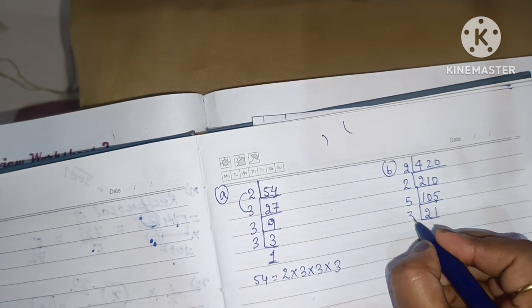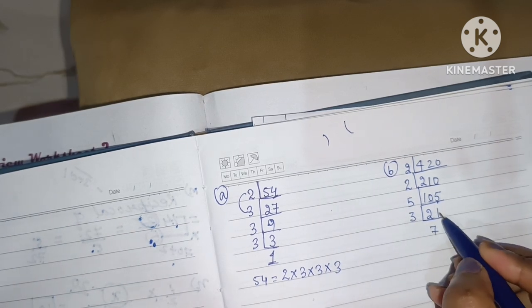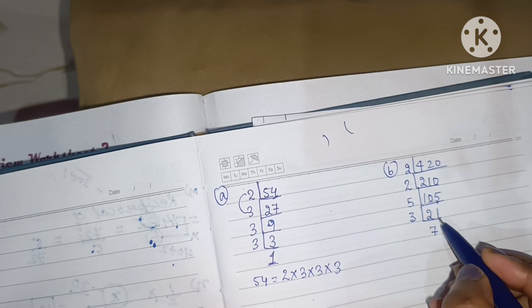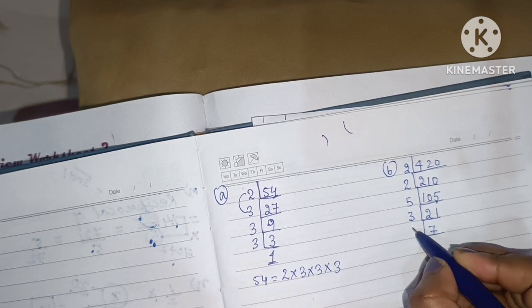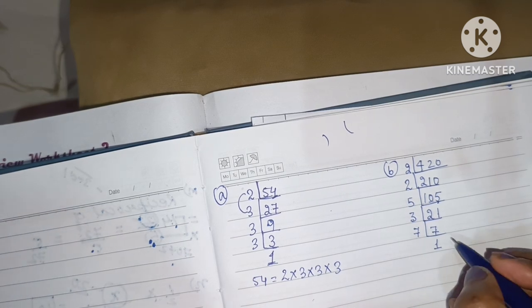Now, 21 is divisible by 3. So, we will write here 7. If we divide 21 by 3, we get 7. Now, if we divide 7 by 7, we get 1.